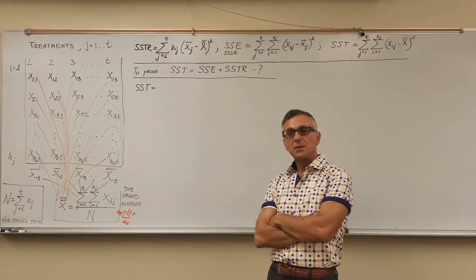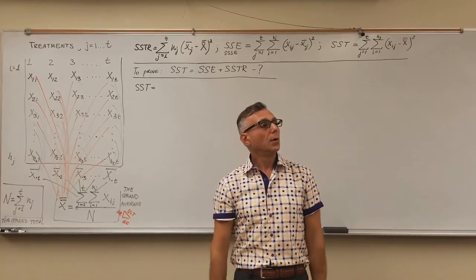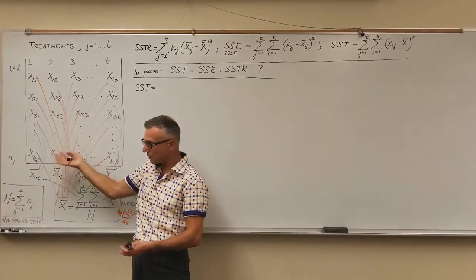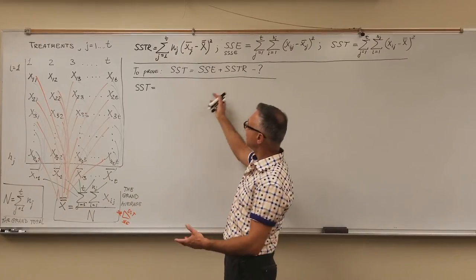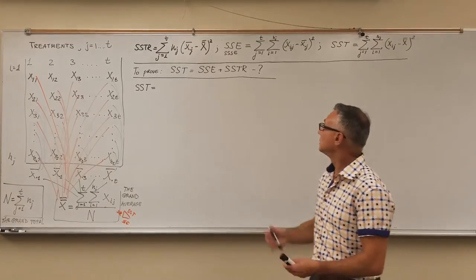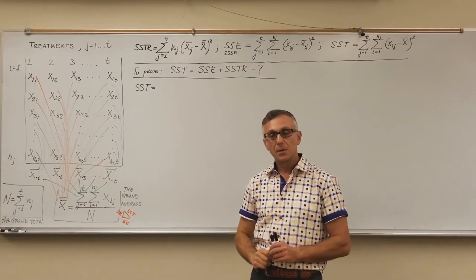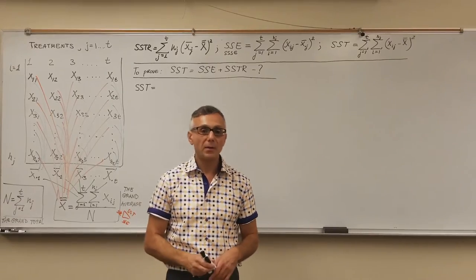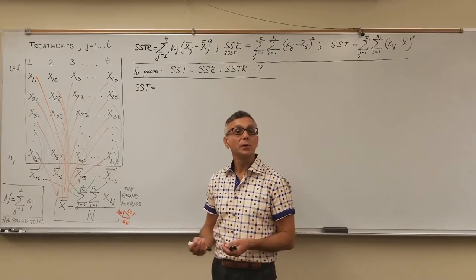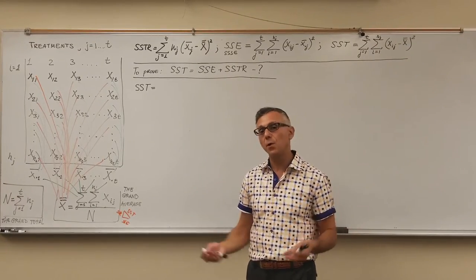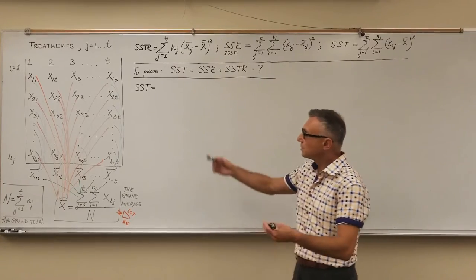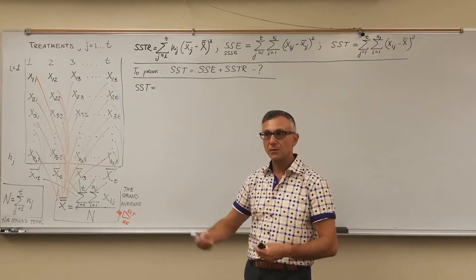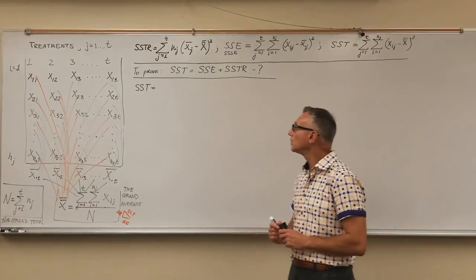I came across YouTube postings where the relationship is demonstrated using real data values — calculating those components separately and verifying that SST equals SSE plus SSTR, which is correct. But that's not a proof. In other sciences, simulating and validating an experiment might be called 'proving it,' but in mathematics that's not enough. To prove it in math, it must be shown logically, analytically, in general, using formulas — sometimes closed-form formulas. Using numbers is just validation, not a proof.